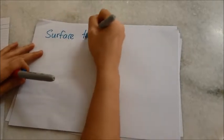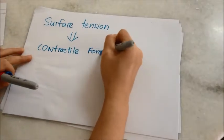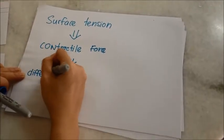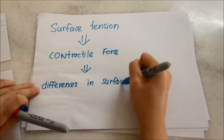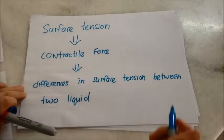But before that, let us have a look at what surface tension is. Surface tension is a contractile force caused by the attraction of the particles in the surface layer by the bulk liquid, and the Marangoni effect occurs due to the differences in surface tension between two liquids.